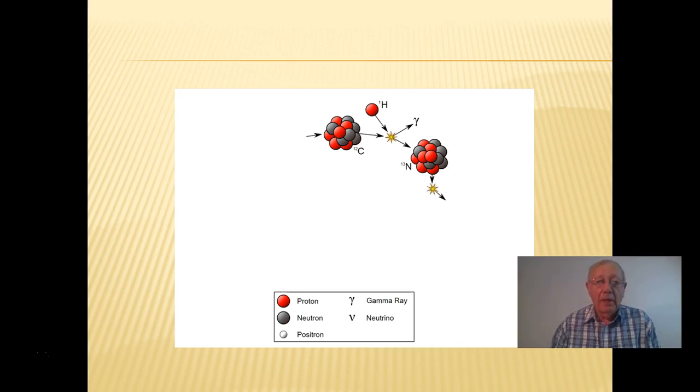That nitrogen then can decompose and produce first of all a neutrino, a positron, and a carbon-13 atom or nucleus.